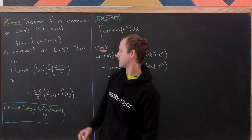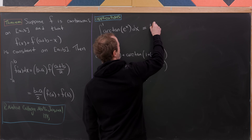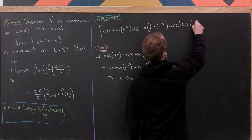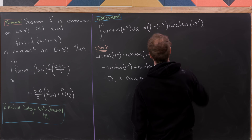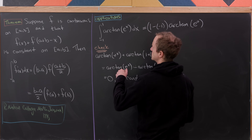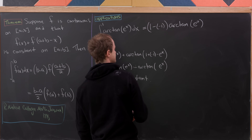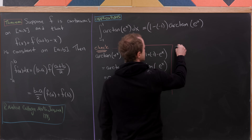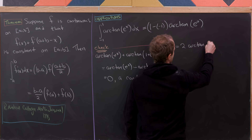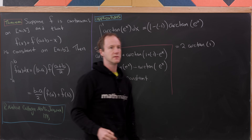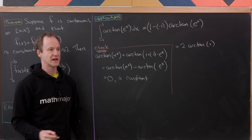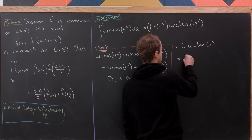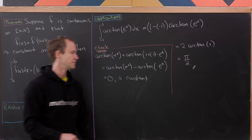Applying the first version: b - a = 1 - (-1) = 2, times arctan(e^x) evaluated at the midpoint 0. That gives 2 times arctan(1). Since tan(π/4) = 1, arctan(1) = π/4. So we get 2 times π/4, which is π/2.